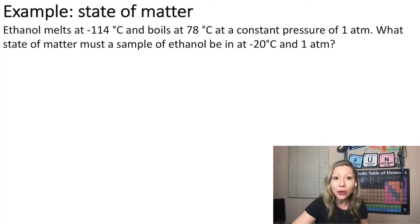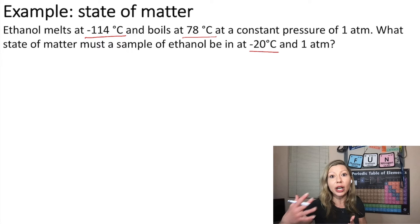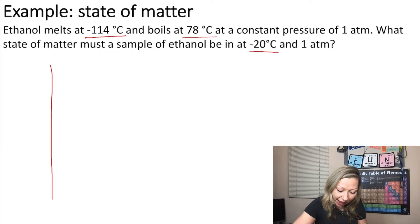First we have ethanol, which melts at negative 114 degrees Celsius and boils at 78 degrees Celsius at a constant pressure of 1 atm. What state of matter must a sample of ethanol be at negative 20 degrees Celsius and 1 atm? The pressure is constant in this whole process, so we are changing the temperature. I like to visualize these processes using a helpful graph.